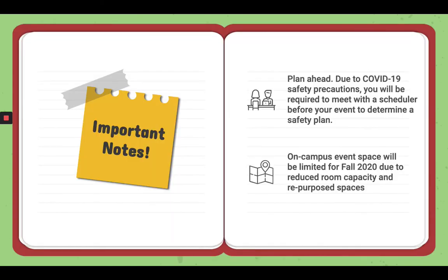Some important things to know: you want to plan ahead. Due to COVID-19 safety precautions, you will be required to meet with a scheduler before your event to determine a safety plan. Also keep in mind that on-campus event space will be limited for fall 2020 due to reduced room capacity and repurposed spaces.